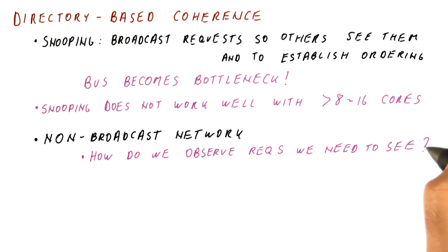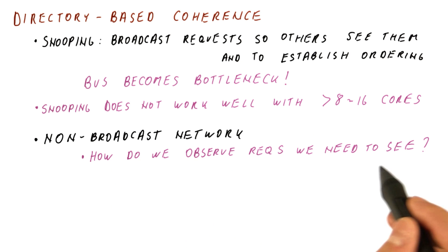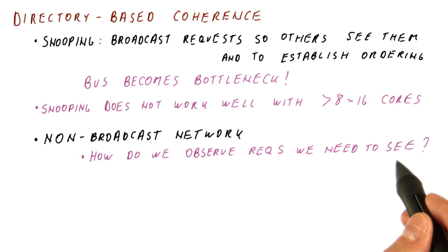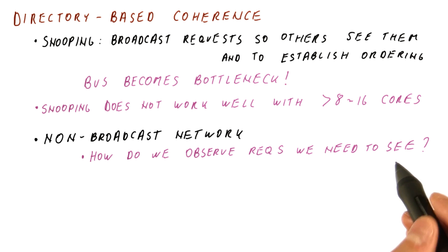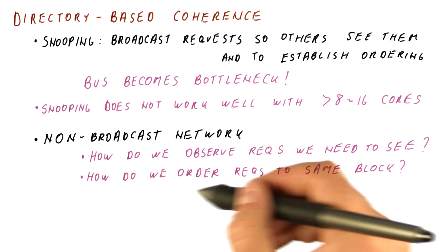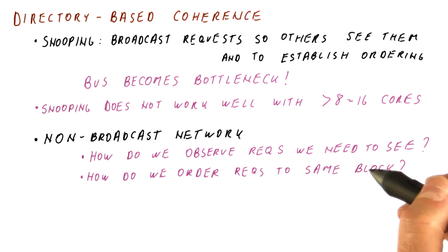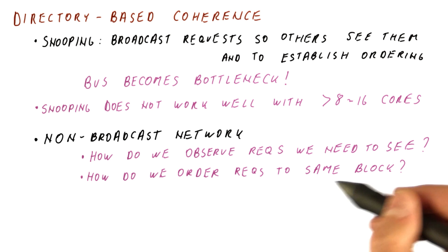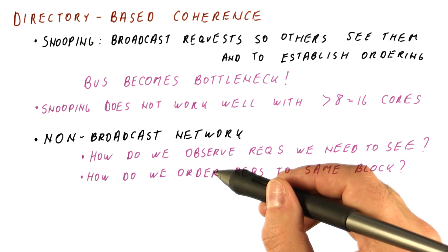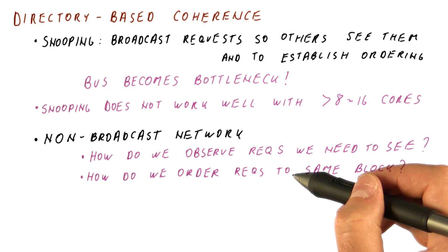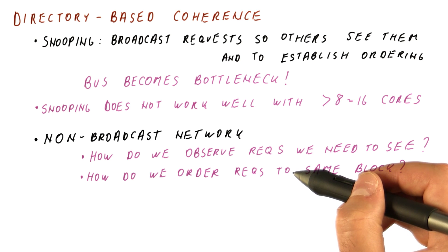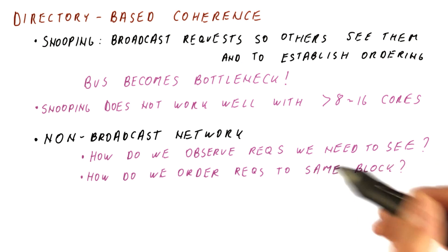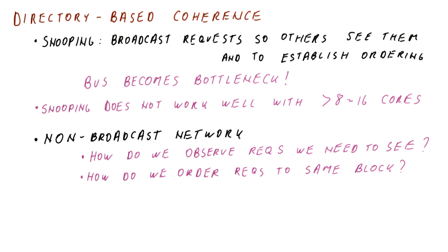But then we have the problem of how do we observe the requests that we need to see. For example, if we are in a shared state, it had better be that when there is a write by somebody else, we observe that write so that we can move to the invalid state to avoid incoherence. And also, how do we decide the ordering for requests that go to the same block — for example, the ordering between writes done at different cores if these requests can be made on different parts of the network? The structure that handles this is called a directory.